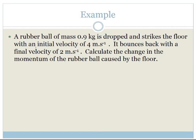Let's look at a slightly more complicated example. We've got a rubber ball of mass 0.9 kilograms that is dropped and strikes the floor with an initial velocity of 4 meters per second. It bounces back with a final velocity of 2 meters per second.